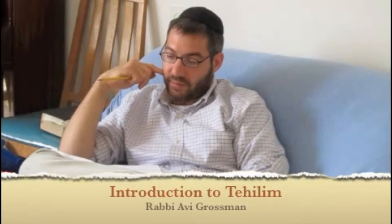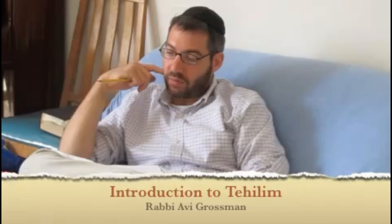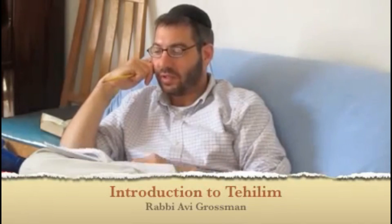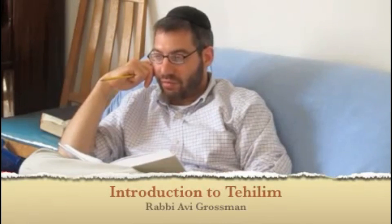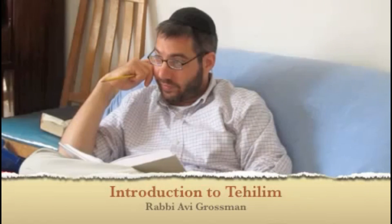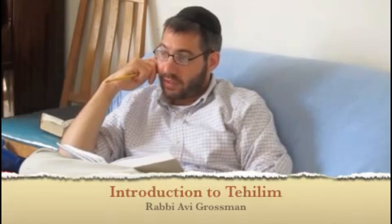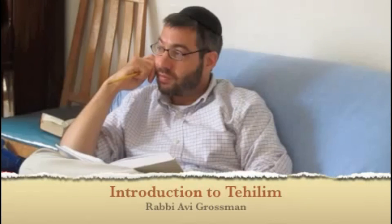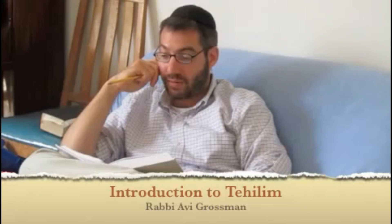Three books of the Bible are even more musical than the others: Iyov — Job — Tehillim, which we're looking at now, the Psalms, and Mishlei, Proverbs. They have a different Trop system, which is more specific than the Trop system that the regular Bible uses.